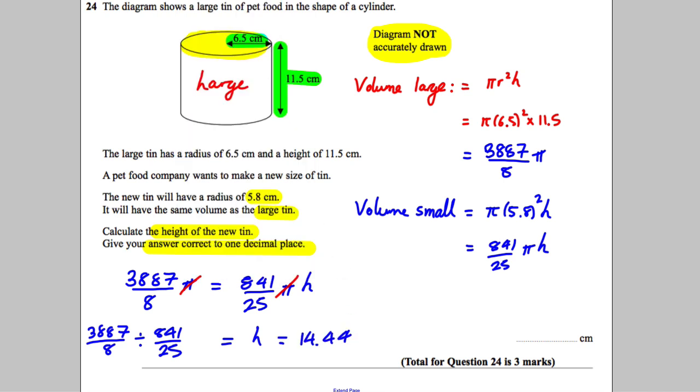We're asked for our answer to one decimal place. Look after the first decimal place - we have a 4 here, so we round down. It's 14.4 centimeters and we're done for that question.